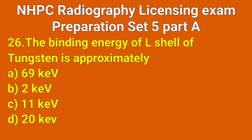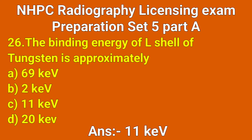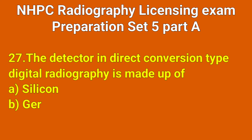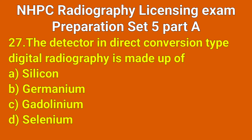Question number 26: The binding energy of the L-shell of tungsten is approximately which option? Correct answer: option C, 11 keV.